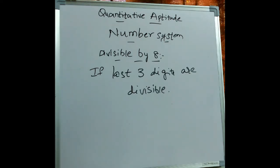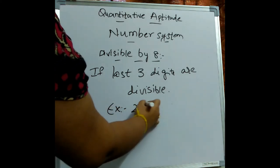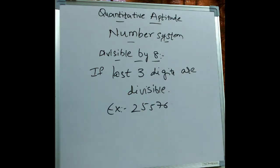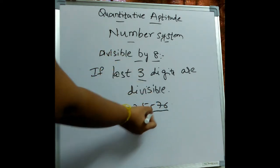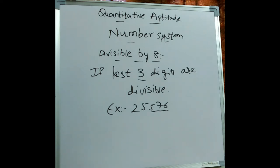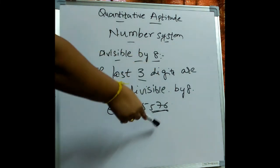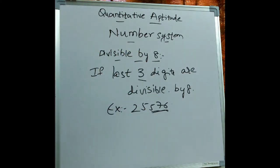Now let's see what is the rule to check whether a given number is divisible by 8. If the last 3 digits of a number are divisible by 8, then the whole number is also divisible by 8. For example, take 25576. The last 3 digits are 576. Since 576 is divisible by 8, the whole number 25576 is also divisible by 8.